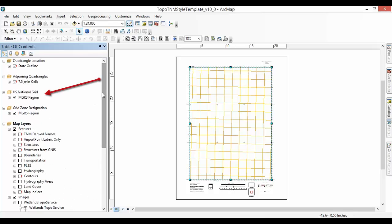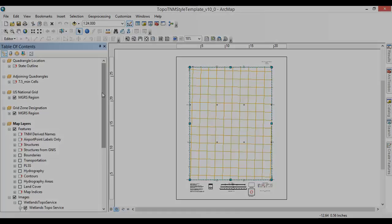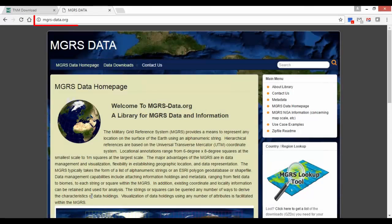An ancillary file geodatabase provided along with the style template contains a military grid reference system feature class and a data table used for coordinate reference in addition to geographic latitude and longitude coordinates. For more information, see the web link shown on screen.